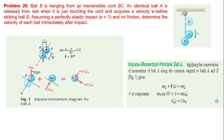Ball B is hanging from an inextensible cord BC. Ball A, identical in size to ball B, is released from rest when it is just touching the cord and acquires a velocity of V₀ before striking ball B. Assuming perfectly elastic collision (e = 1) and no friction, determine the velocity of each ball immediately after impact.